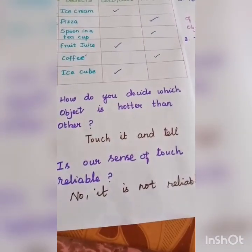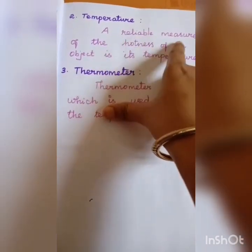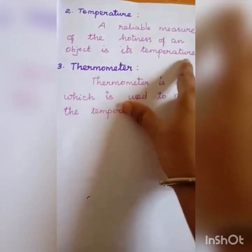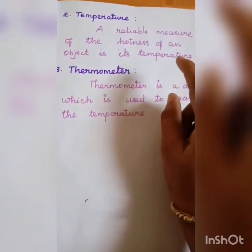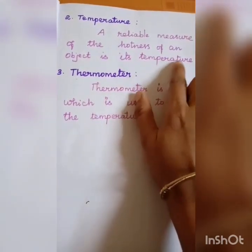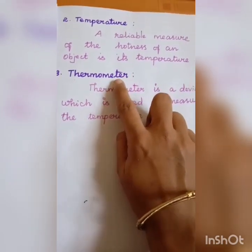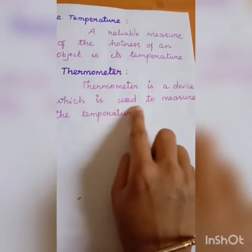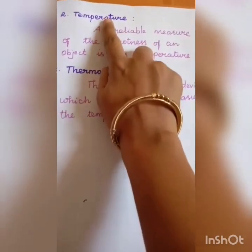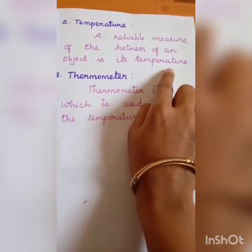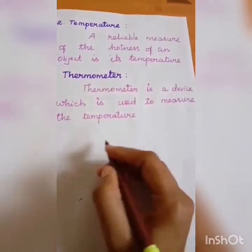How do we find how hot an object really is? The answer is temperature. A reliable measure of the hotness of an object is its temperature. And a thermometer is a device which is used to measure the temperature.